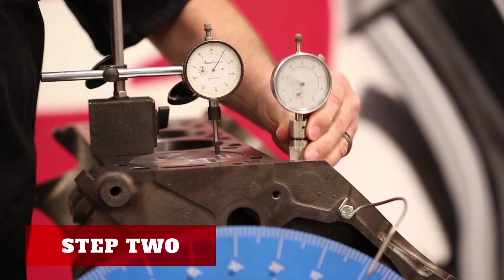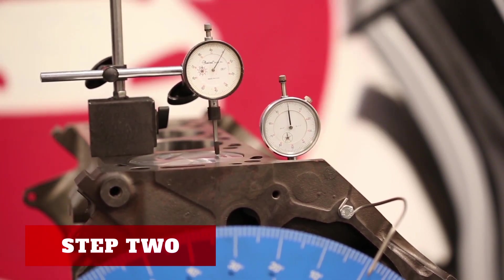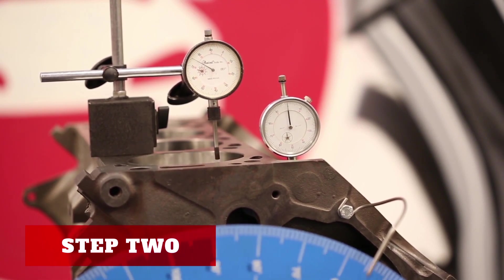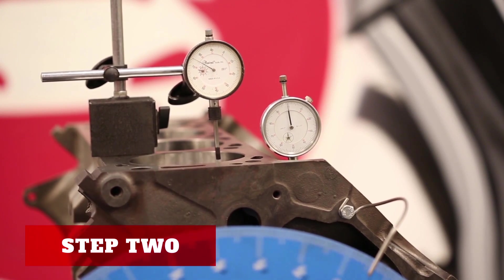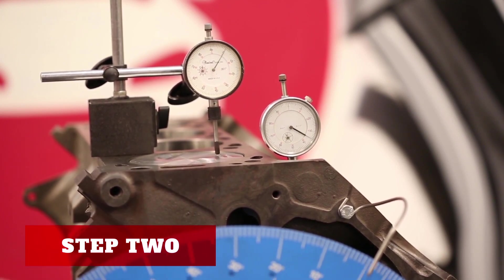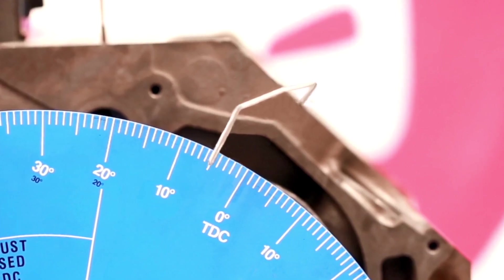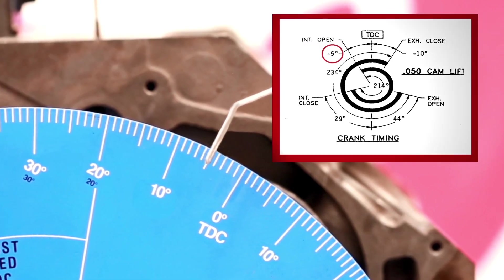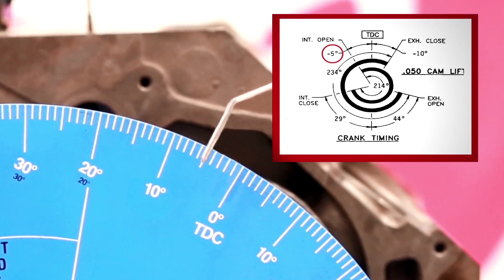Now we'll put a dial indicator on the intake cam lobe and start turning the degree wheel clockwise. First we'll check the intake cam opening event. When the indicator starts to move we'll stop at 50 thousandths and record our number from the wheel. We're showing five degrees before TDC. On the spec card it shows minus five degrees, so five degrees before TDC.